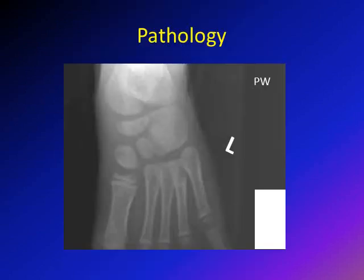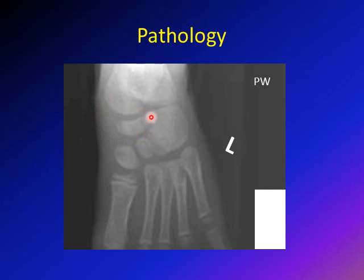Before we discuss the pathology of Kohler's disease, let me speak first about the navicular bone. So this is the navicular bone — you have the talus here, you have the calcaneus, and then you have the navicular bone. The navicular bone is on the medial side of the foot, in between the talus and the medial cuneiform.